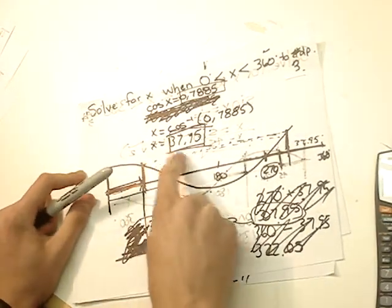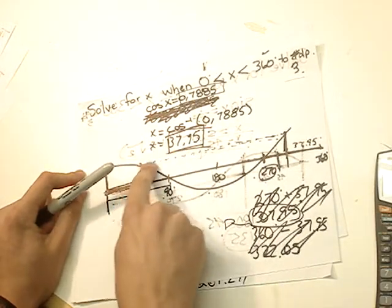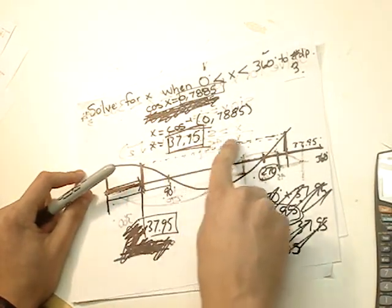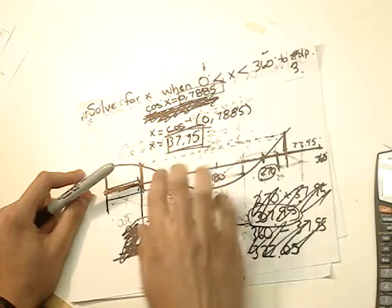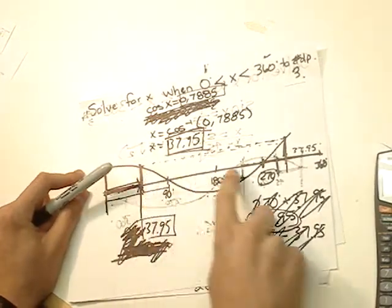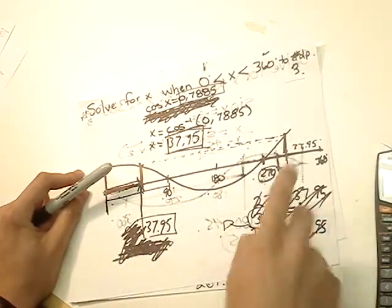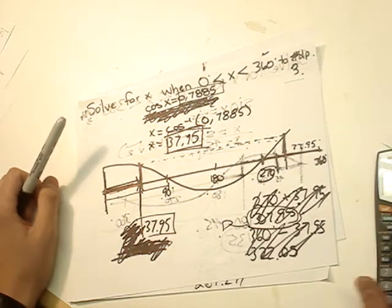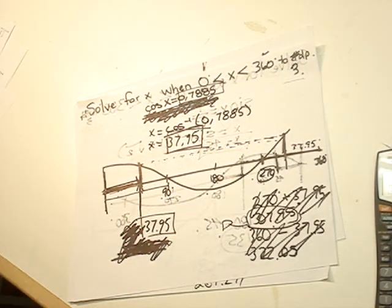You would look over to where there's this type of curvature again. So that would be over here.